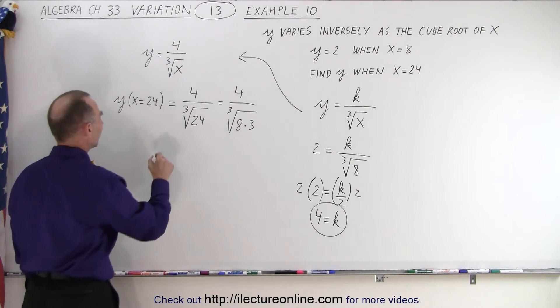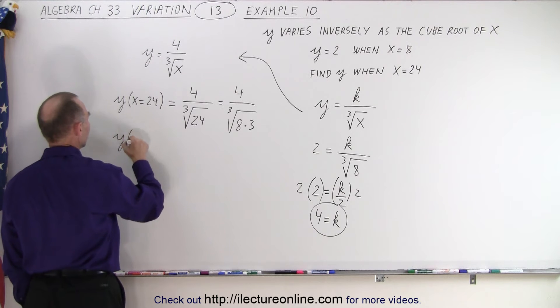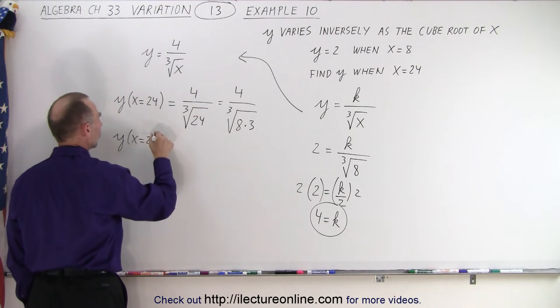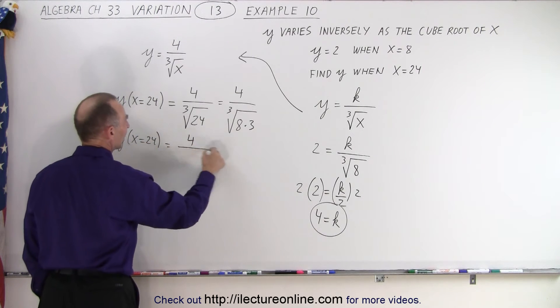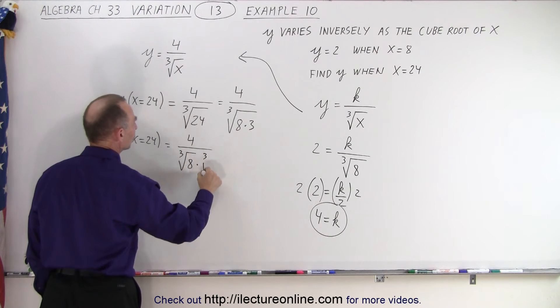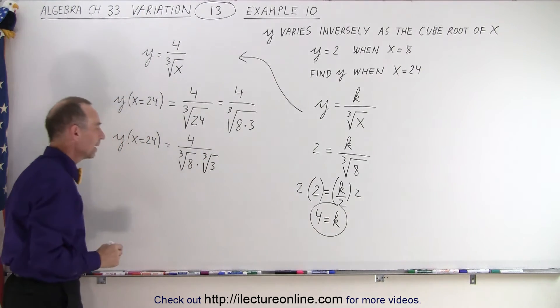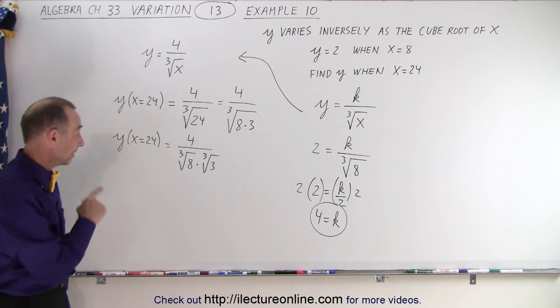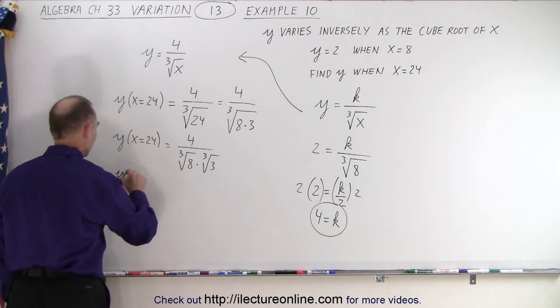Okay, that means that y, when x equals 24, is equal to 4 divided by the cube root of 8 times the cube root of 3. Of course, the cube root of 8, that's equal to 2. So y,